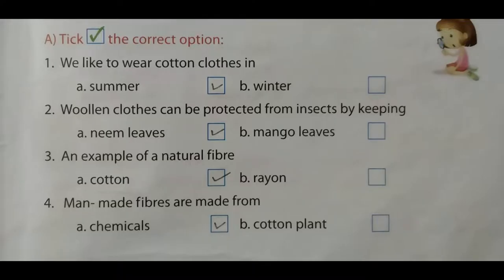Let's check the right answers. First question: We like to wear cotton clothes in summer — the right answer is summer. Second question: Woolen clothes can be protected from insects by keeping neem leaves — the right answer is neem leaves, so put a tick mark on neem leaves. Question number 3: An example of a natural fibre — the right answer is cotton. Question number 4: Man-made fibres are made from chemicals — the right answer is chemicals.